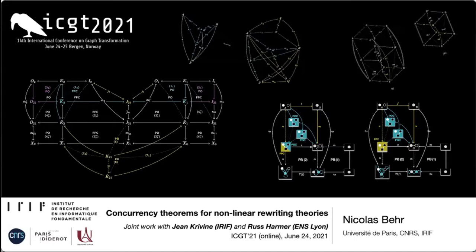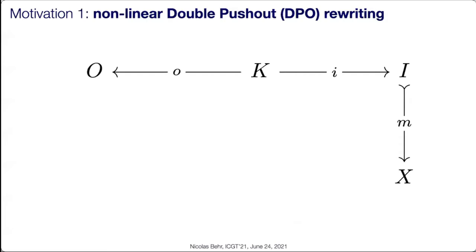The best way to start is with a quick motivation. If you are in our community and have read any work on double push-out rewriting, the story always goes like this: you have a span, you have some category with spans in it, some objects, and you want to write them. Then immediately you come to a problem because the rules at least have to be input-linear.